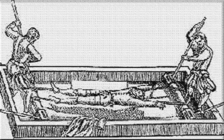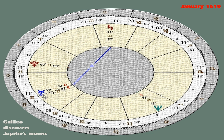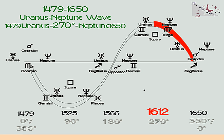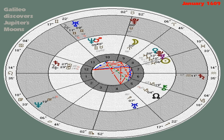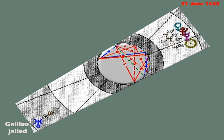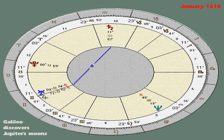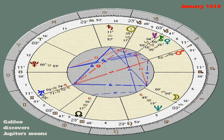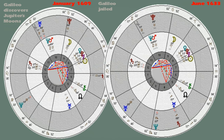When Galileo discovered the four moons in 1609, transiting Uranus and Jupiter were conjunct Mars and Neptune, and therefore opposite natal Uranus — the classic Uranus opposite Uranus that happens to everybody around age 42, the midlife crisis. Neptune in the second house was just past having a transit opposition to the stellium in his sixth and seventh house. The Jupiter-Uranus transit of 1609 set off everything; it's a sensitive point in the whole episode from 1609 to his jailing in 1633.